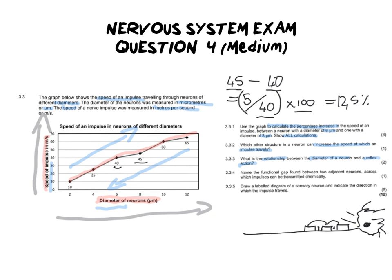Then we move to the next question where it says name the functional gap found between two adjacent neurons across which an impulse can be transmitted chemically. It's only for one mark so we need one word and I think we all know that this is the synapse. It's the empty space. I think also they may accept here synaptic cleft because that's another way of describing that space.